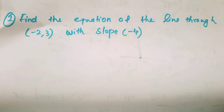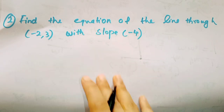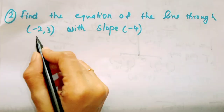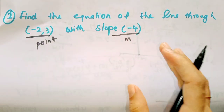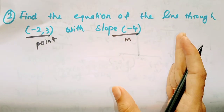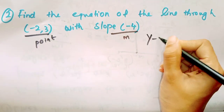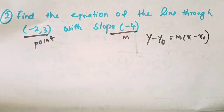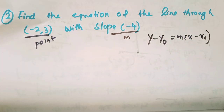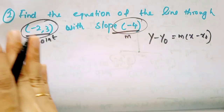Find the equation of the line through the point minus 2, 3 with slope negative 4. Let's take a look at the point and slope form. The equation is y minus y0 equals m into x minus x0. This is the point-slope form.